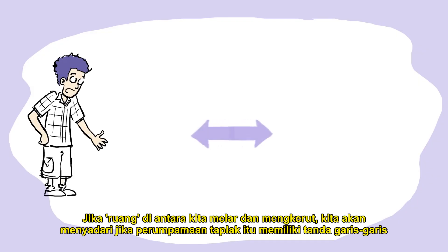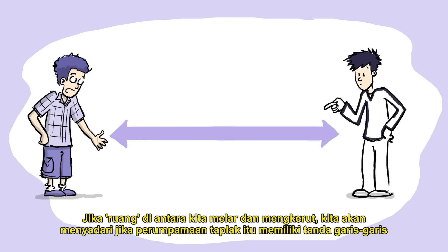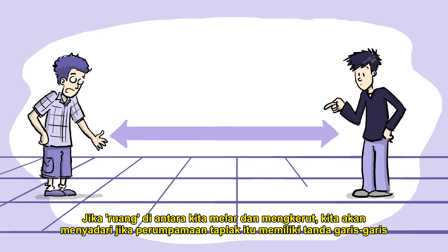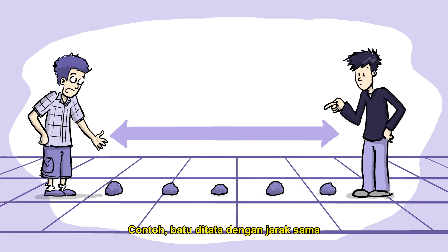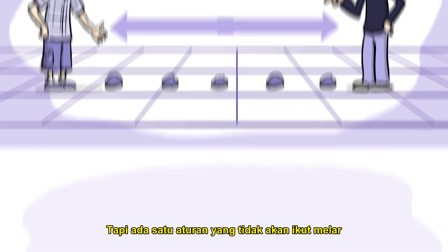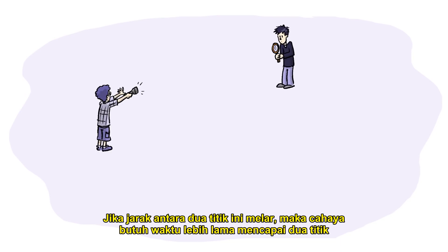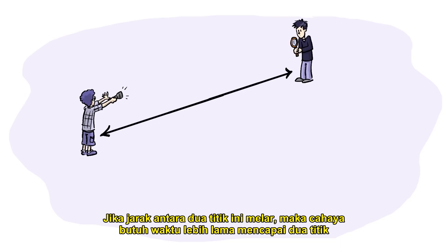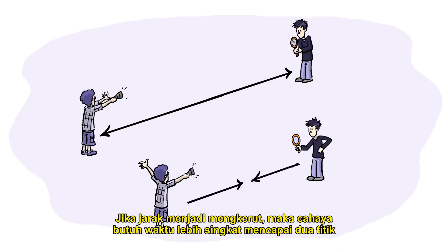How would you observe a ripple in space? If the space between you and me stretched or compressed, we wouldn't notice it if we had made marks on our metaphorical rubber sheet — using equally spaced rocks, for example — because these marks would also get stretched further apart. But there is one ruler that doesn't get stretched: one made using the speed of light. If the space between two points gets stretched, then light will take longer to go from one point to the other. And if the space gets squeezed, light takes less time to cross the two points.